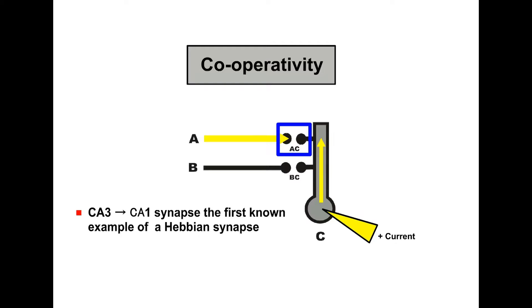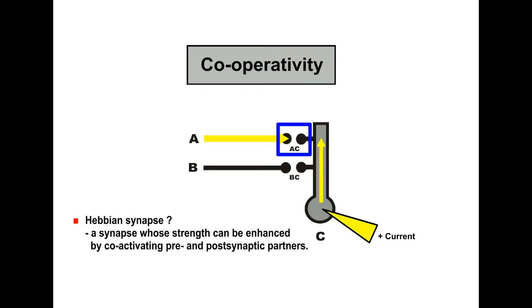CA3 to CA1 synapse, the first known example of a Hebbian synapse. What is a Hebbian synapse? A synapse whose strength can be enhanced by co-activating pre and post synaptic partners.